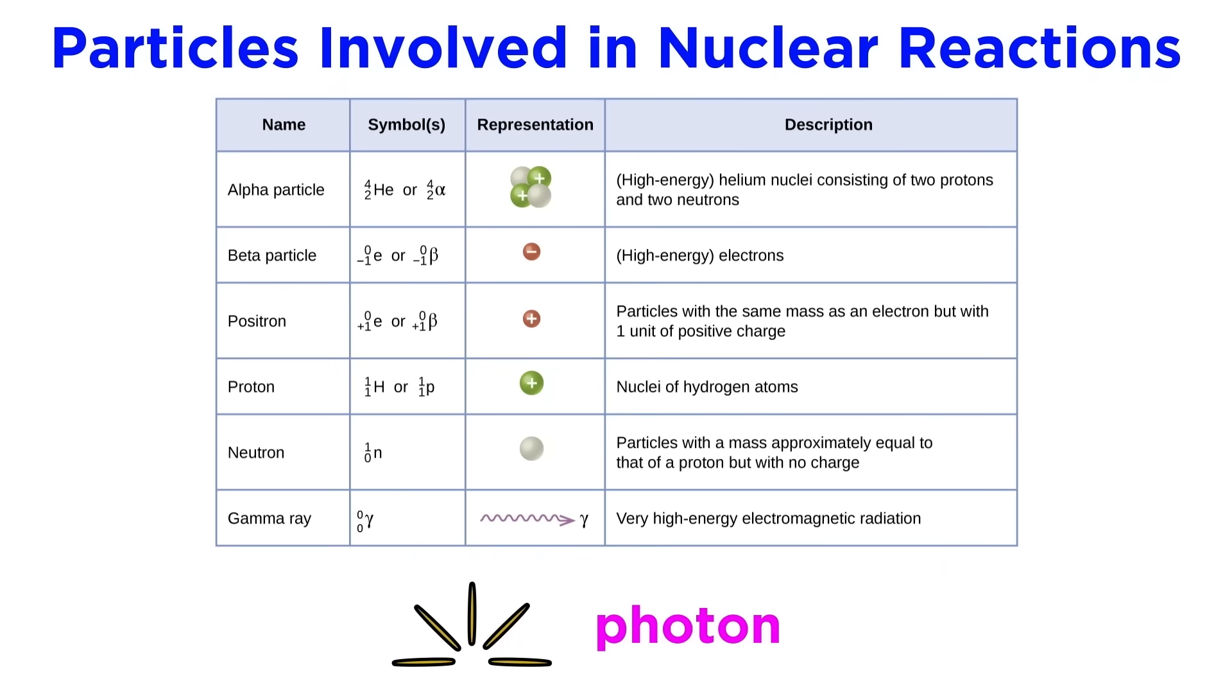Lastly, there is the gamma ray. This is a particle of light, or electromagnetic radiation, known as a photon, just like the ones we saw emitted by electrons in the Bohr model. But these ones are of exceptionally high energy. This will be symbolized with a gamma, and two zeros, as light has no mass.